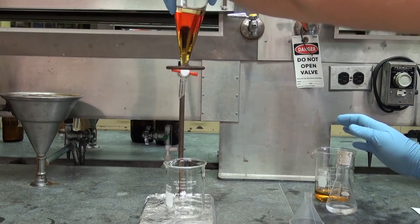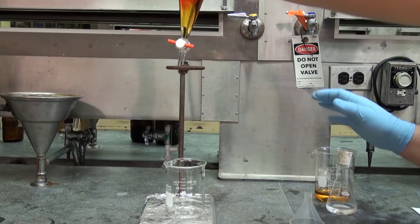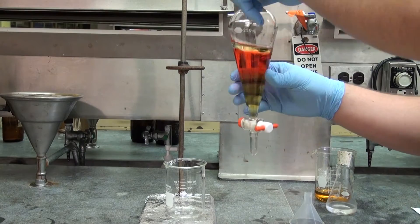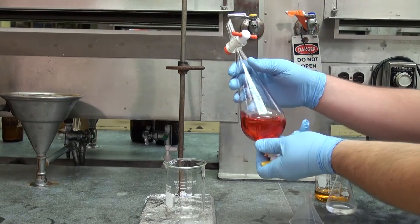Take the separatory funnel out of the ring and secure the lid with one hand. Turn the separatory funnel around.